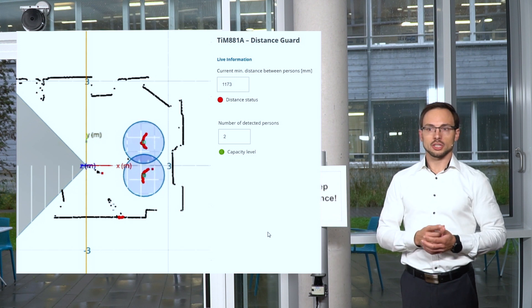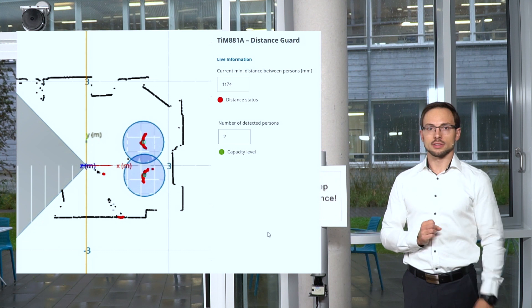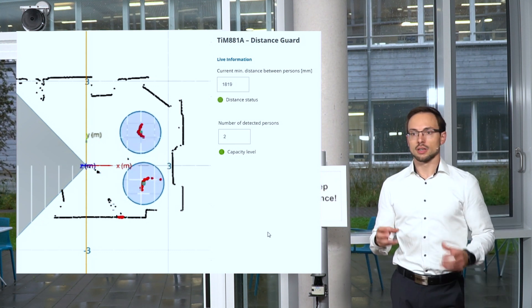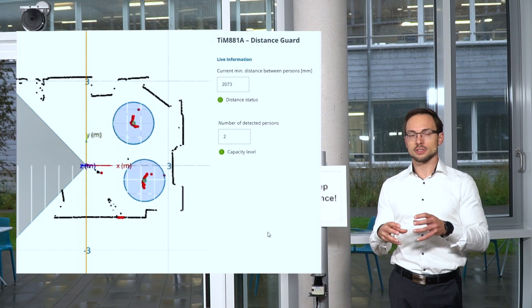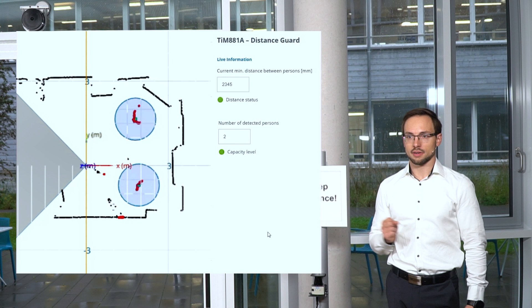When we move apart from each other then everything turns green again and the distance is capped. Additionally you can also measure the occupancy for this specific area which is now two persons as another effect.